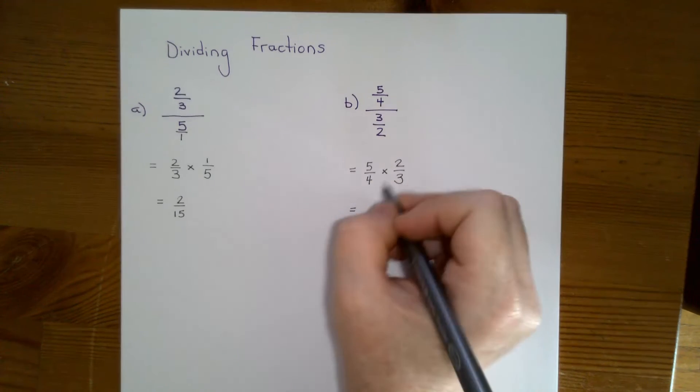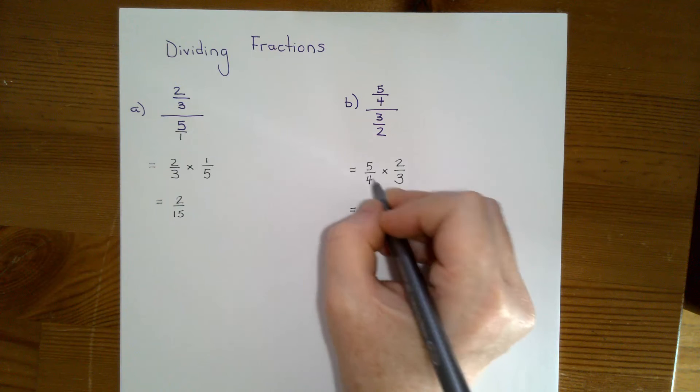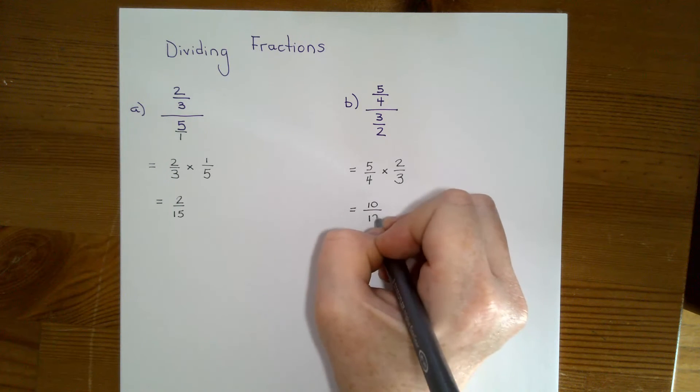Because we're multiplying, we multiply the numerators. So we get 10 and we multiply the denominators. So we get 12.